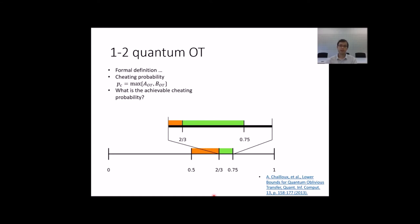According to the provided reference, any quantum OT protocol can be cheated at least with 66% probability. This is the lower bound. On the other hand, the best known OT protocol has 75% cheating probability. This is an upper bound. Any better protocol would decrease the upper bound. There is a gap between what is known to be achievable and what is known to be impossible.